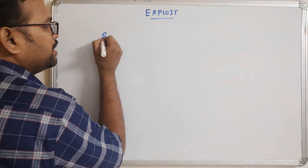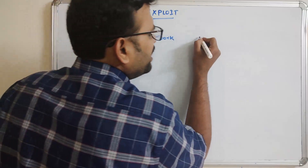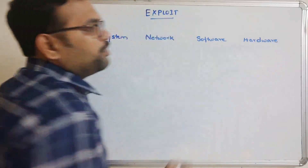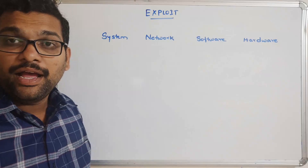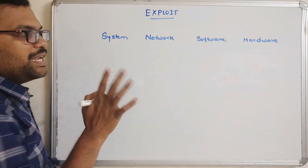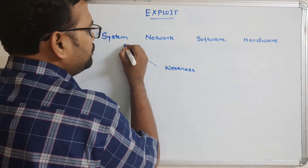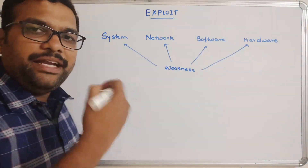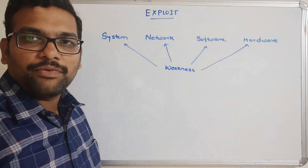For example, consider if there is any system, network, software, or hardware. The work of a hacker is to gain access of either a system, network, software, hardware, or data. And that will be done through the weakness of these particular aspects. If there is any weakness in a system, network, software, or hardware, that weakness will be taken as an advantage by the hacker.